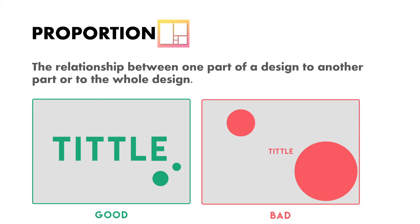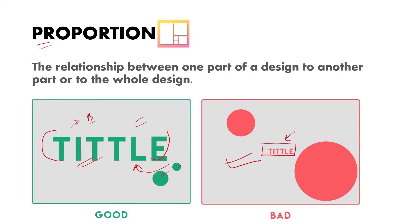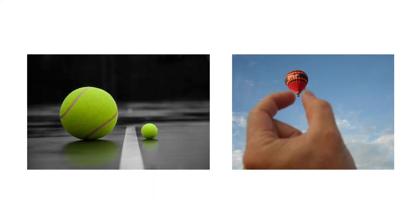Next is proportion. Proportion is the relationship between one part of a design to another part or to the whole. In a good example, circles have proportions based on importance — since the most important element is bigger, its proportion relative to others is greater. In a bad example, an important element is made very small, so its proportion compared to others is too small. That is the bad example of proportion, and the reverse is the good example.